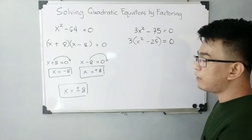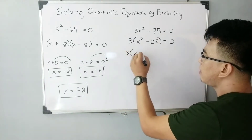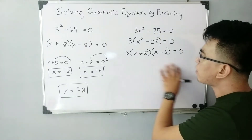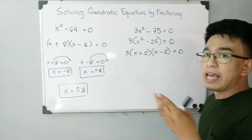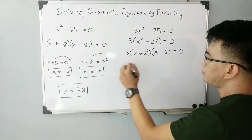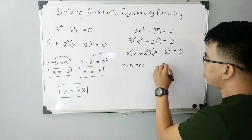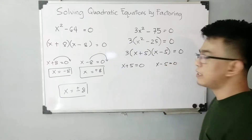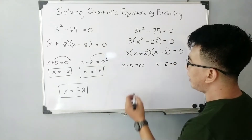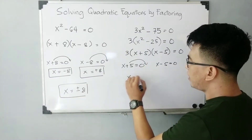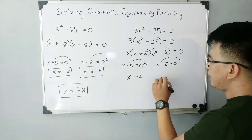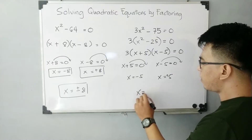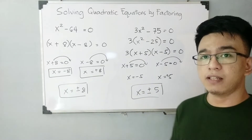We factor x squared minus 25 as 3 times (x + 5)(x - 5) is equal to zero. We equate each factor to zero: x plus 5 equals zero, and x minus 5 equals zero. By solving, transposing gives x is equal to negative 5, and the other gives x is equal to positive 5. So x is equal to plus or minus 5 — these are the possible values of x.